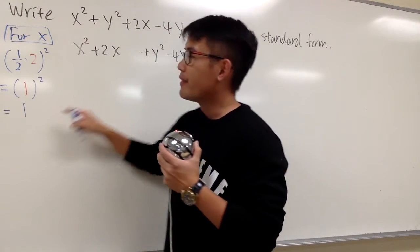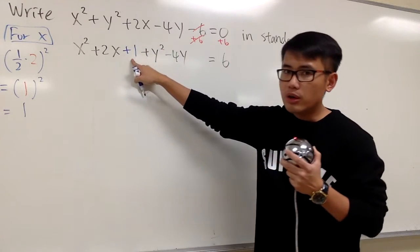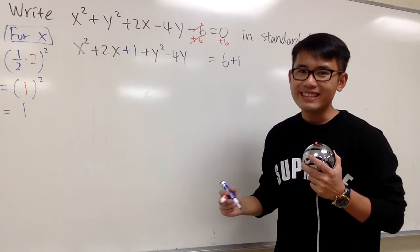This is the 1 that we have to add right here. So plus 1. And be sure we add the same number on both sides. We add 1 on both sides.